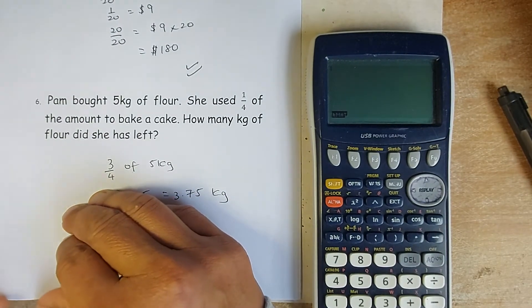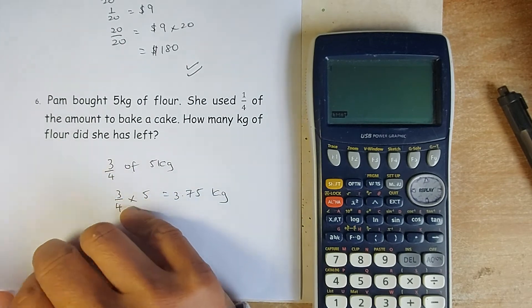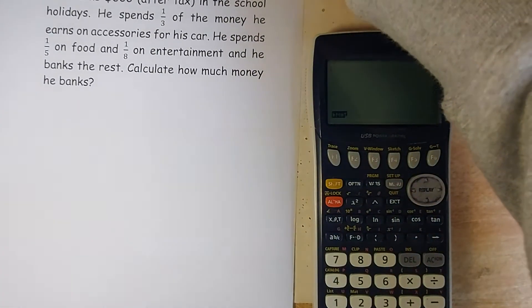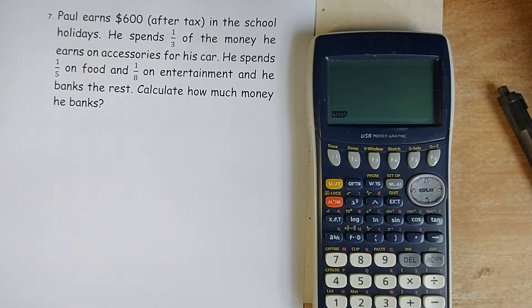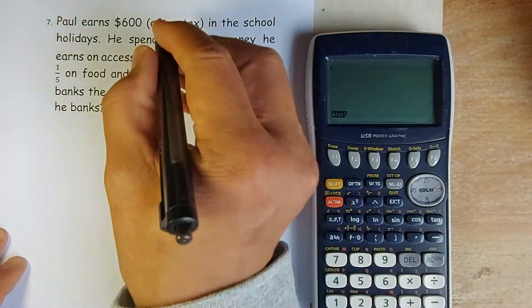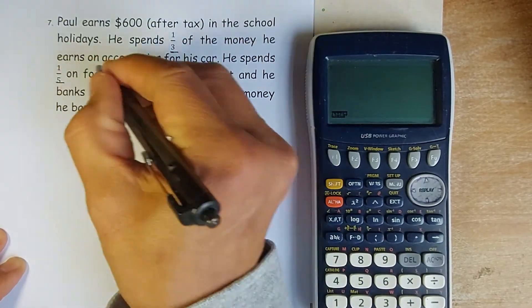We have done 2 questions now, and we shall look at the 2 hardest questions, which is the word problem. The next question is... have a read first. Paul earned $600 after tax. He spent 1 third of the money he earned on accessories for the car. He spent 1 fifth on the food, and 1 eighth on entertainment, and he banks the rest. So very simple, you add all the 3 fractions.